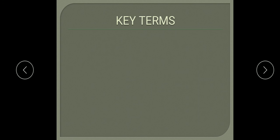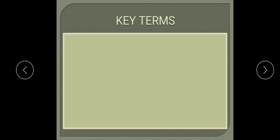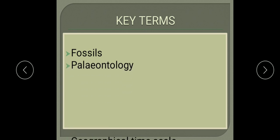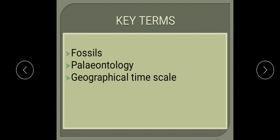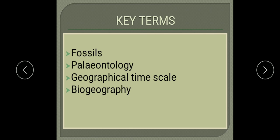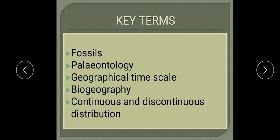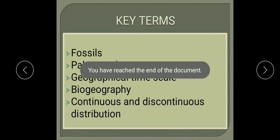All these evidences provide clues about the process of evolution. Read the chapter from the book and revise these key terms: fossils — petrified remains of past organisms; paleontology — study of fossils; geological time scale — the time period on earth divided into eras, periods, and epochs; biogeography — geographical distribution of organisms; and continuous and discontinuous distribution of organisms.